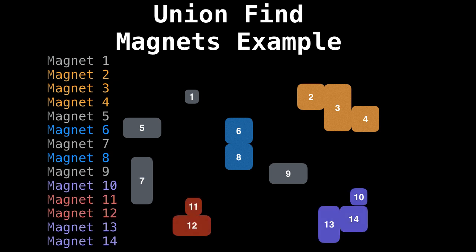Now perhaps two, three, and four are highly attracted to each other, so they would form the yellow group. And perhaps 10, 13, and 14 would also form a group. This keeps on going and we unify magnets into groups. And perhaps we merge some magnets onto already existing groups — so we unify a gray magnet, which is just a magnet in its own group, to an already existing group.